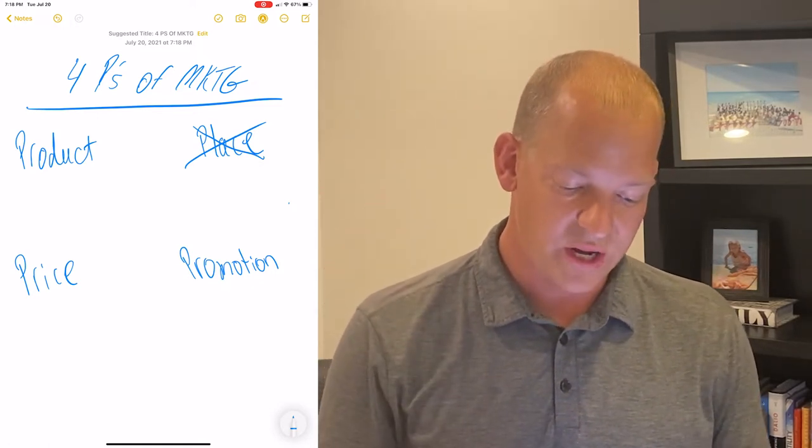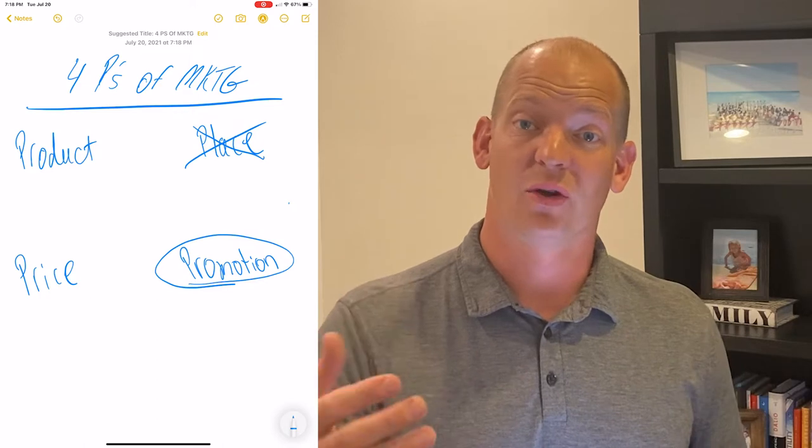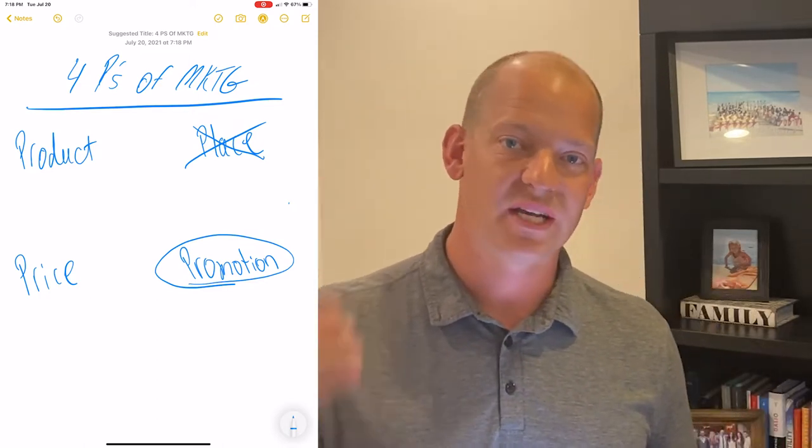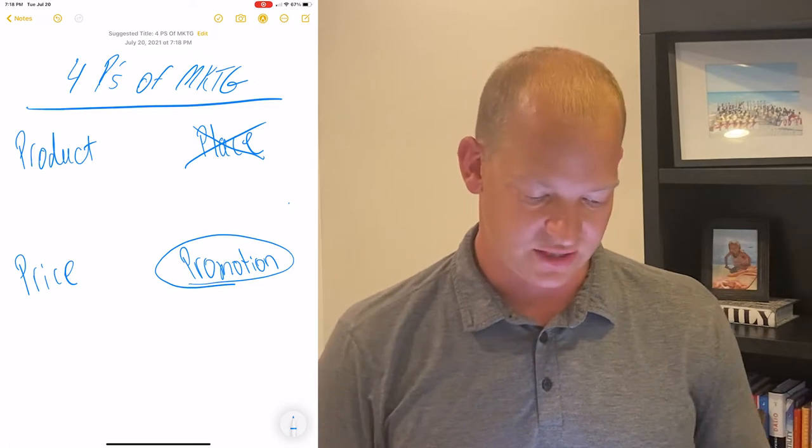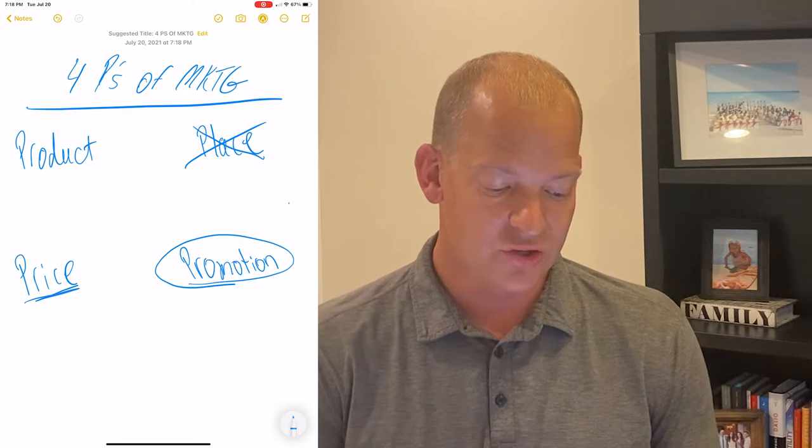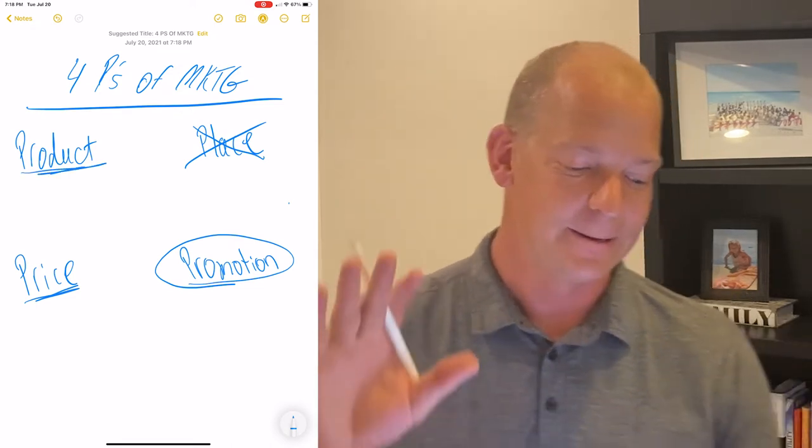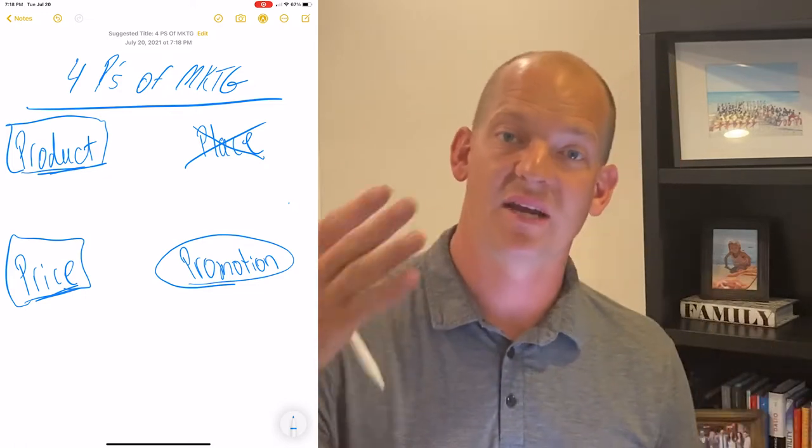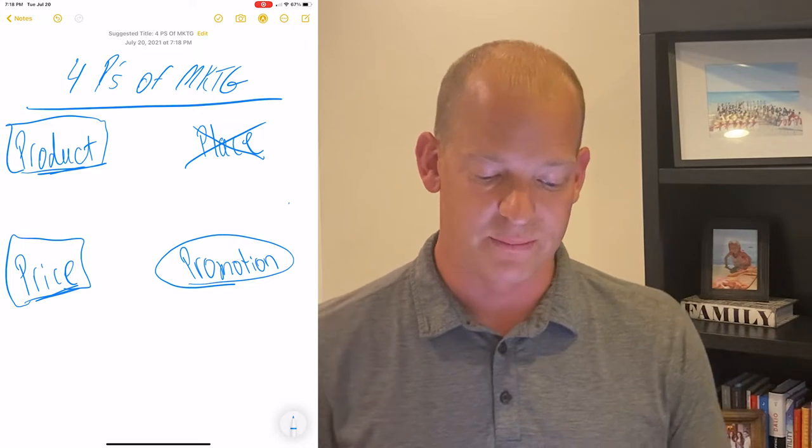As agents, we have direct control over promotion. What that means is we have control over where we put it, how we present it on those specific portals, how the listing reads, what order the photos go in, how many photos we take, how many tours we do, the signage, all those things. Now the seller has control over price decisions and usually has control over product decisions. Most of the time, the seller is in control of the product and price. We can advise over decisions around product and price, but our executable is around promotion.